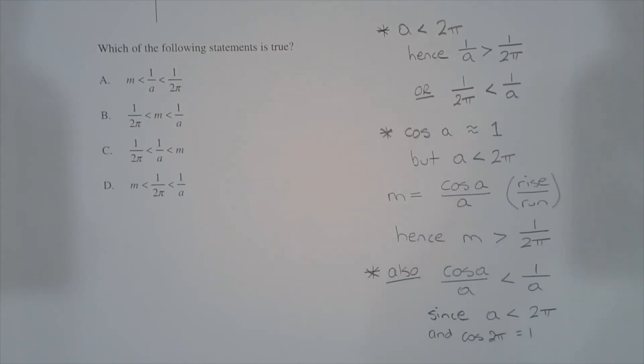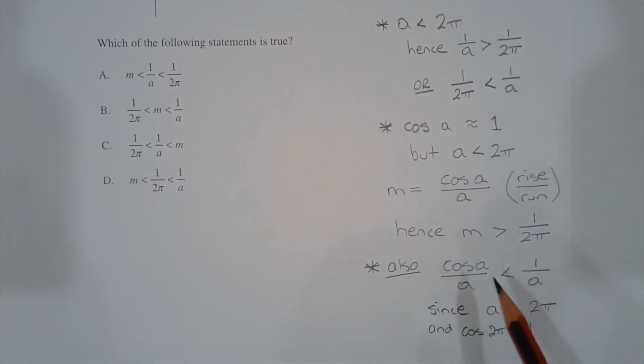The last point to consider is that cos of a over a is less than 1 over a, since a is less than 2π. And cos of 2π is approximately equal to 1. So in an inequality, if the denominators are equal, or one numerator is slightly less than the other numerator, cos of a is ever so slightly less than 1, cos of a over a, or m, is less than 1 over a.